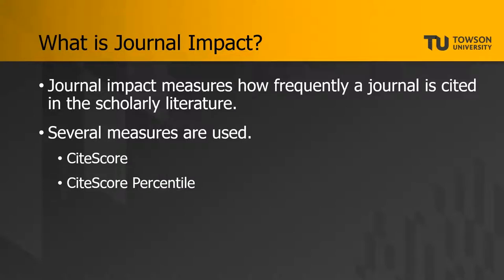There's also something called Cite Score Percentile. This measure takes that Cite Score and compares it to other journals in the same field of research. A percentile score of 80%, for example, means that a journal has a higher Cite Score than 80% of other journals in that field.